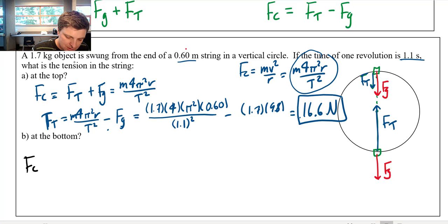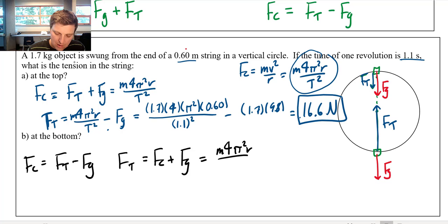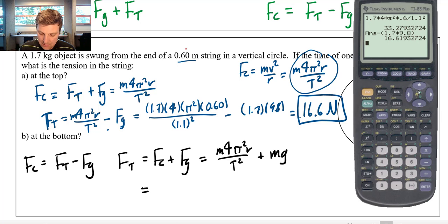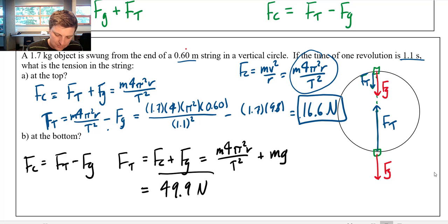At the bottom, FC equals FT minus FG. Rearranging, FT equals FC plus FG — they work together. So FT equals m4π²r over t² plus mg. I already calculated the centripetal force as 33.279 N, and I add to that 1.7 times 9.8. That gives a tension force of 49.9 newtons. So clearly much bigger at the bottom.